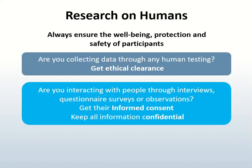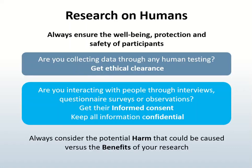Informed consent is when you explain to the participant exactly what you are going to do, why you are going to do it, how you are going to do it, and what you will do with the data. You then explain this in writing in their language of choice, and they sign it. For minors, the consenting adult must sign. Keep all information confidential. Do not disclose names, contact details, or other personal information. For example, pseudonyms or fake names are appropriate.